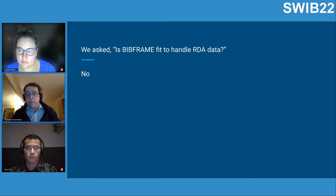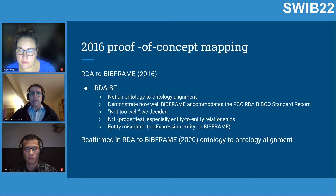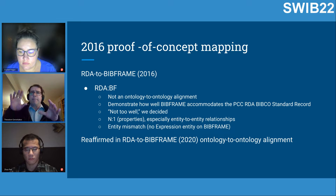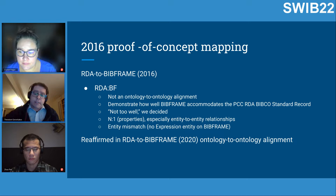We thought BIBFRAME was not ready, so we did a proof-of-concept mapping in 2016 from RDA to BIBFRAME. This was not an ontology-to-ontology alignment; we wanted to demonstrate how well BIBFRAME accommodated an application profile of RDA called the PCC RDA BIBCO Standard Record. We found it didn't do a very good job. Key problems included too many many-to-one relationships — many RDA properties mapping to the same BIBFRAME property — and an entity mismatch due to the lack of an expression entity in BIBFRAME.